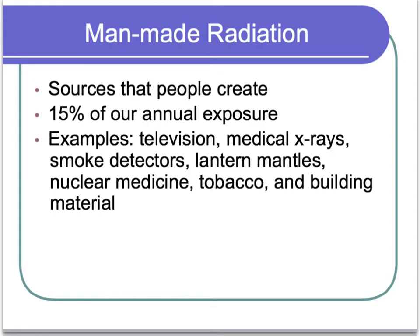Man-made radiation, on the other hand, comes from sources that people create. It accounts for about 15% of our annual exposure to radiation. Some examples of where you might be encountering radiation are from your television, from any kind of medical x-rays that you've gotten, from your smoke detectors in your house. Those give off a little bit of radiation. From lantern mantles, if you've ever used those camping lanterns.